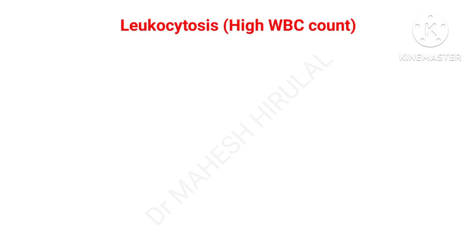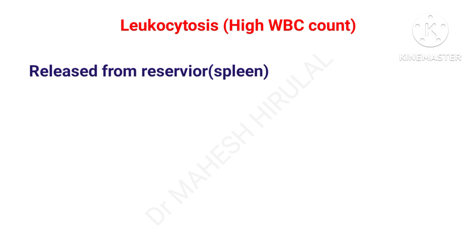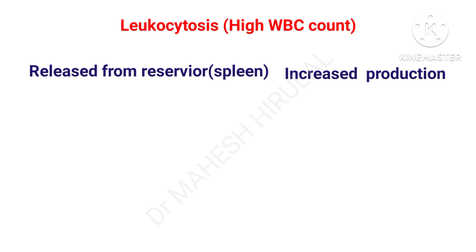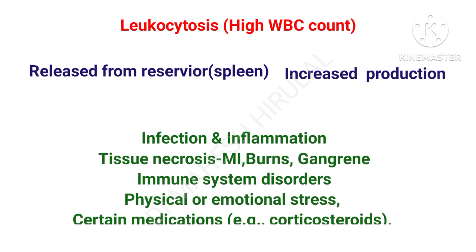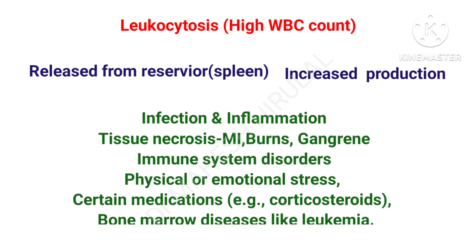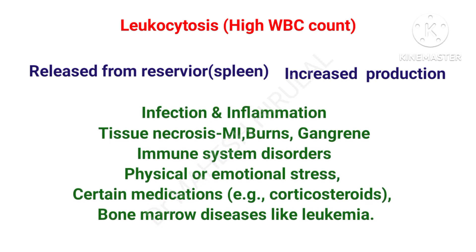Leukocytosis may occur due to excessive release of WBCs from reservoirs or by increased production of WBCs. Increased WBC count suggests infection and inflammation. In tissue necrosis like MI, burns, and gangrene, we may observe high WBC counts. In many immunological disorders and physical or emotional stress, WBCs will also increase. Certain medications and extreme bone marrow diseases like leukemia can cause very high WBC counts.